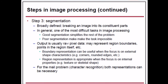Step 3 is segmentation — broadly defined as breaking an image into its constituent parts. Good segmentation is one of the most important tasks in image processing as it simplifies the rest of the problem, while poor segmentation makes the task nearly impossible. The output is usually raw pixel data representing region boundaries or points in a region. Boundary representation is useful when focusing on external shape characteristics, while region representation is appropriate when focusing on internal properties like texture or skeletal shape.